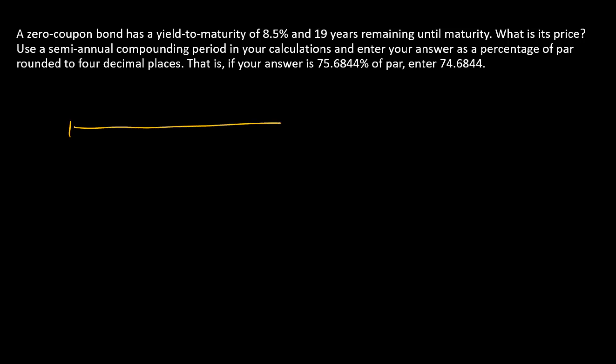Since this is a zero, we have no coupon payments and just a $100 payment at maturity. We've got 19 years to maturity, and we're going to use semiannual compounding periods. So that means we have 19 times 2 is 38 semiannual ticks on the timeline.